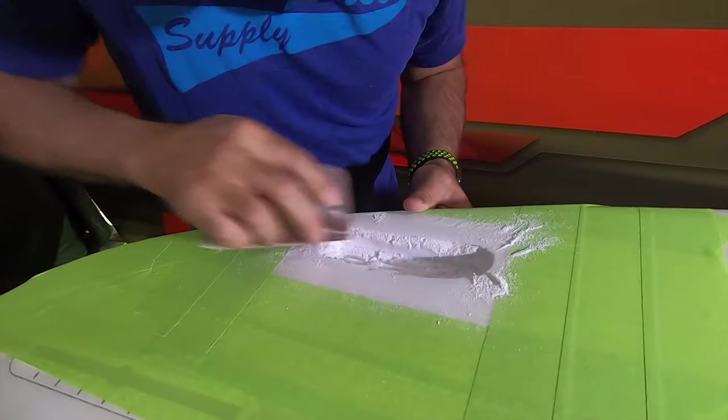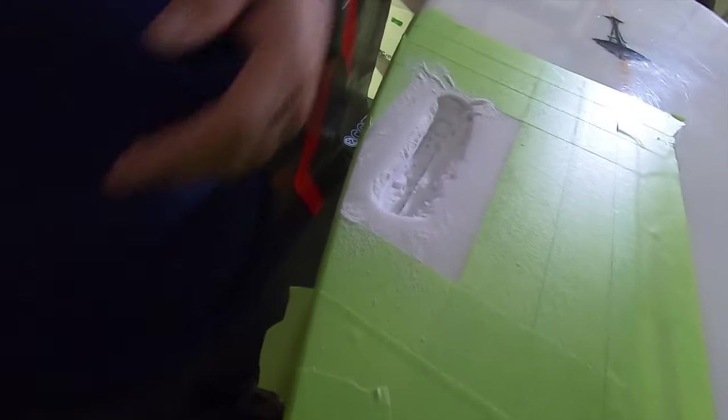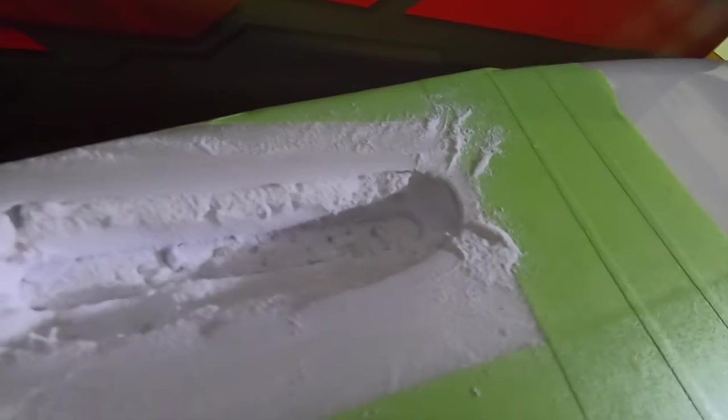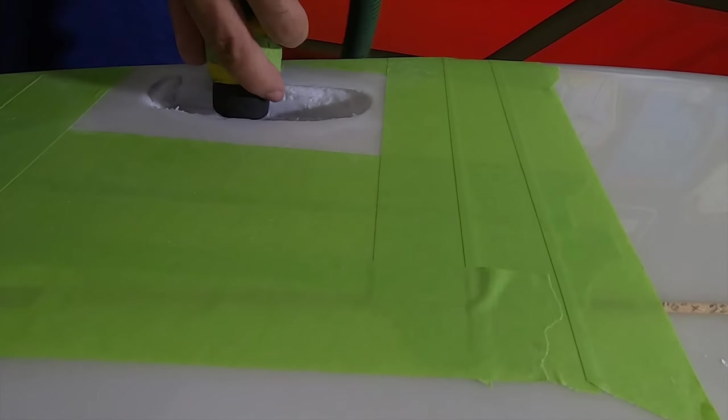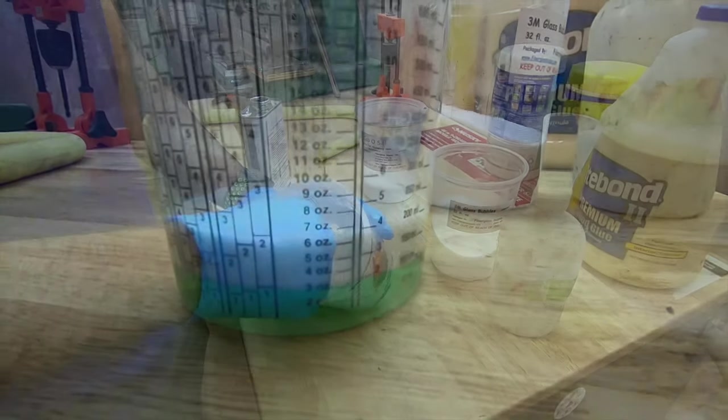We want to keep the board clean so we've masked off around the box so we don't get any putty on other parts of the board, and now we've sanded it around that box to get good adhesion between the putty and the fiberglass surface.